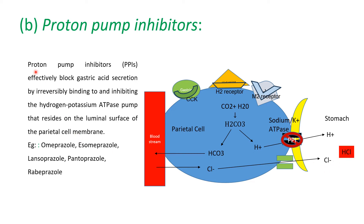Proton pump inhibitors effectively block gastric acid secretion by irreversibly binding and inhibiting the hydrogen-potassium ATPase pump that resides on the luminal surface of the parietal cell membrane. Examples include omeprazole, esomeprazole, lansoprazole, pantoprazole, and rabeprazole.